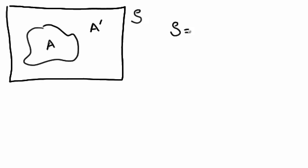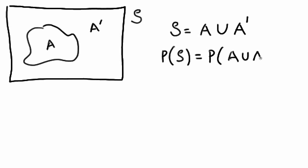That is, S, the sample space, can be written as A union A complement, and therefore the probability of the sample space is the probability of A union A complement.